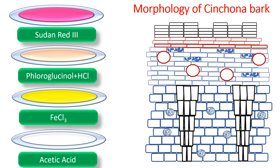Lastly, acetic acid is used as a clearing agent — it clears debris and makes the calcium oxalate crystals clearly visible. The calcium oxalate crystals are microsphenoidal in nature, meaning they are minute in number and present within each cell.